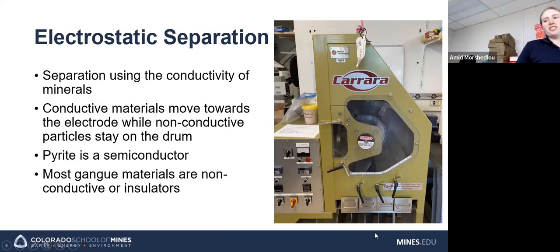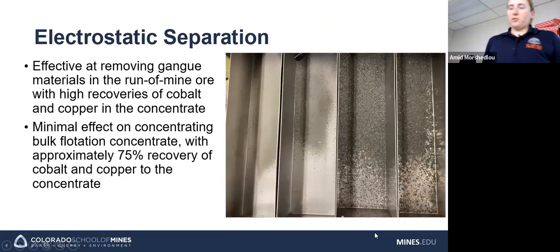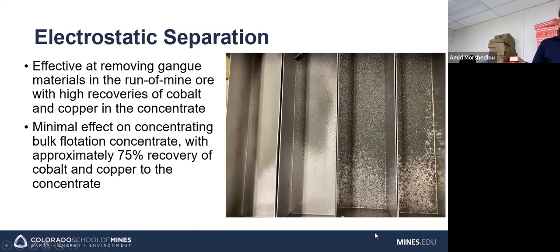So we decided to test this as pyrite is a semiconductor, while most of the gang materials are non-conductive or insulators. So we believe that this could have, at least in the run of mine, a pretty good chance of achieving some sort of separation. So in the run of mine, this was very effective at removing the gang material. We had high recoveries and grades with cobalt and copper. But when tested with the bulk flotation concentrate, there was a minimal effect, which was probably due to the fact that flotation removed most of the gang material.